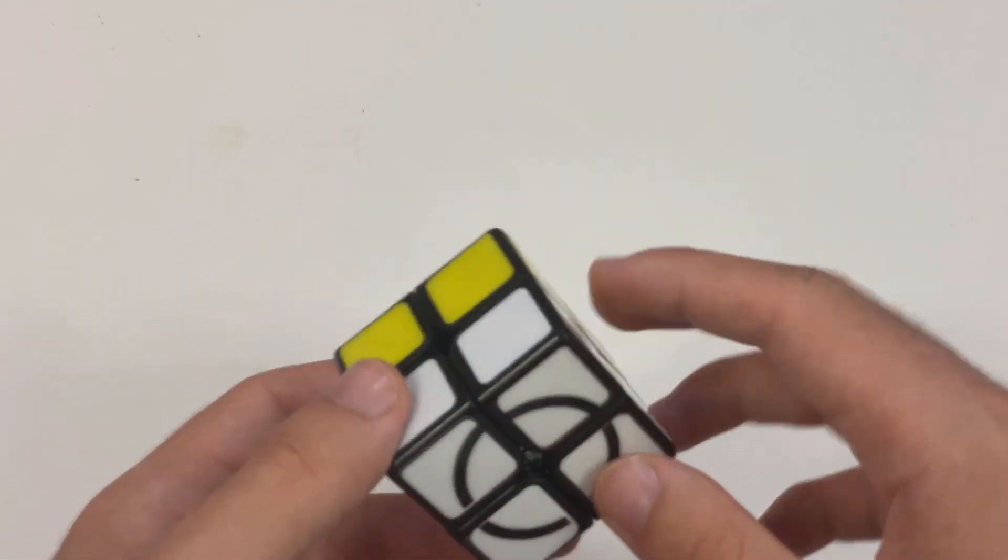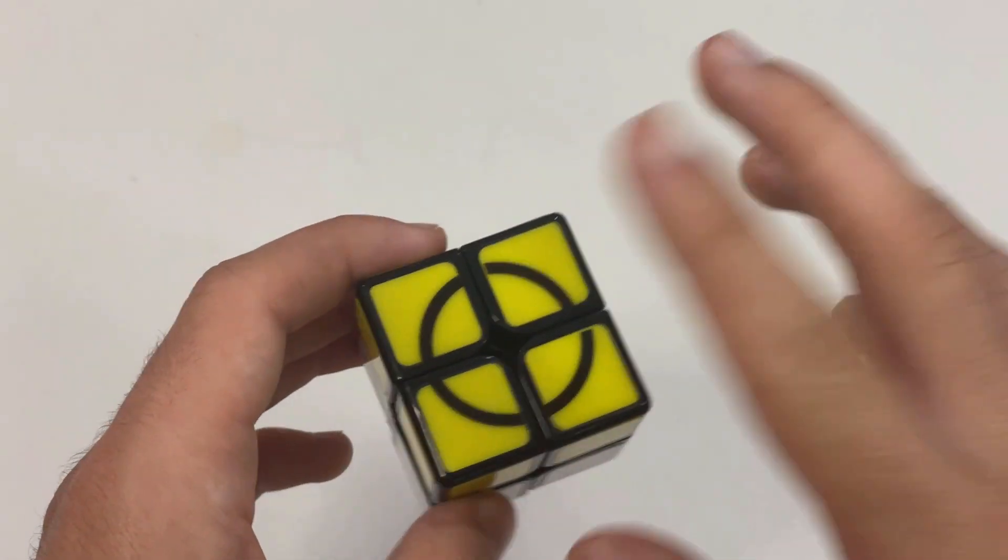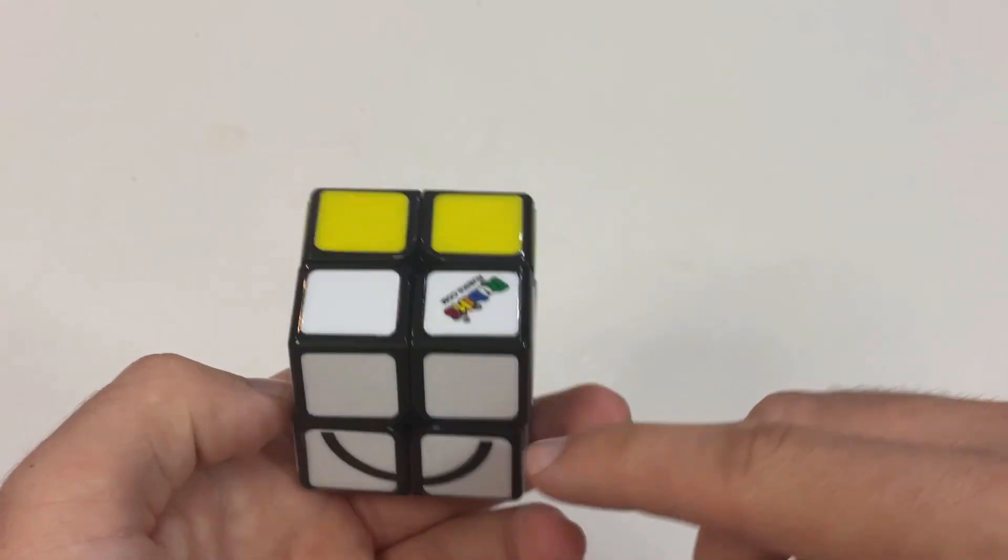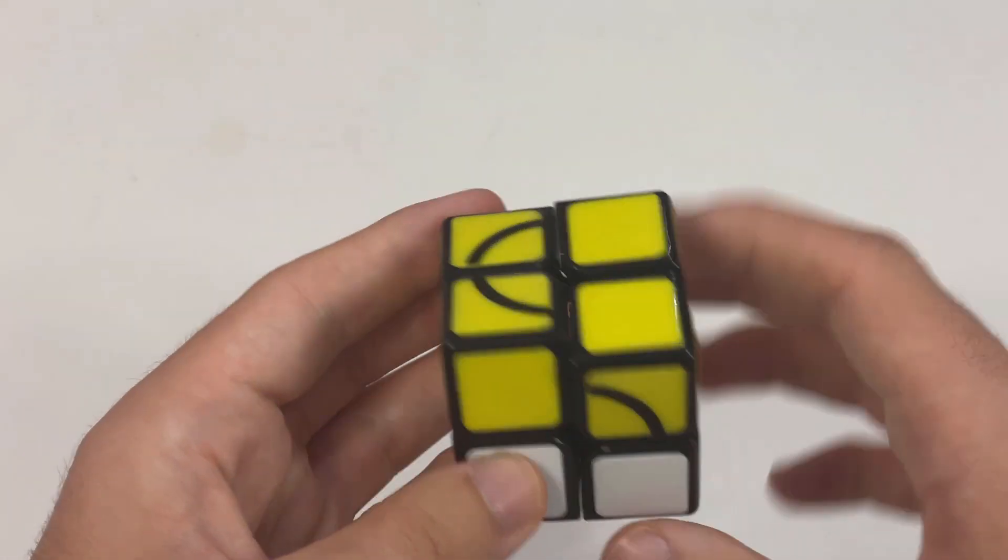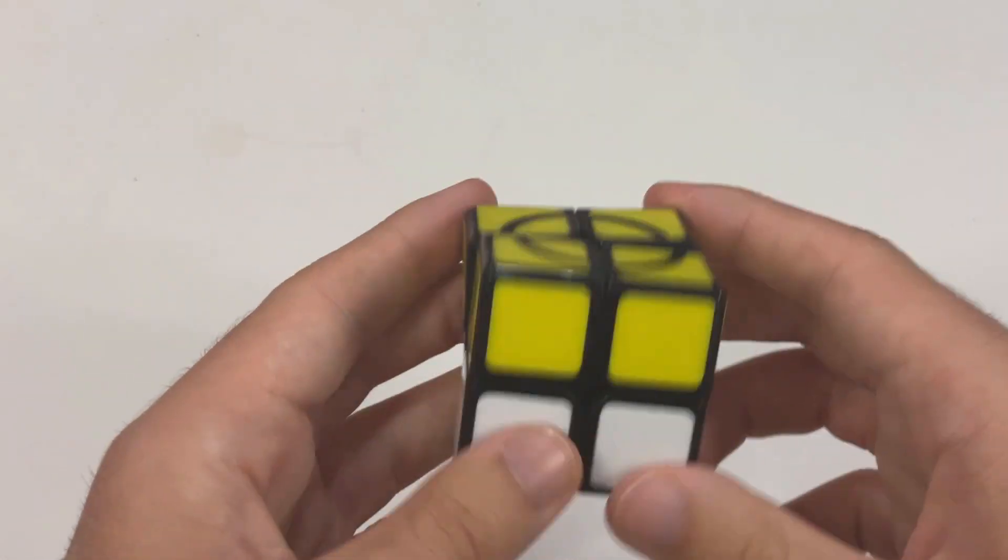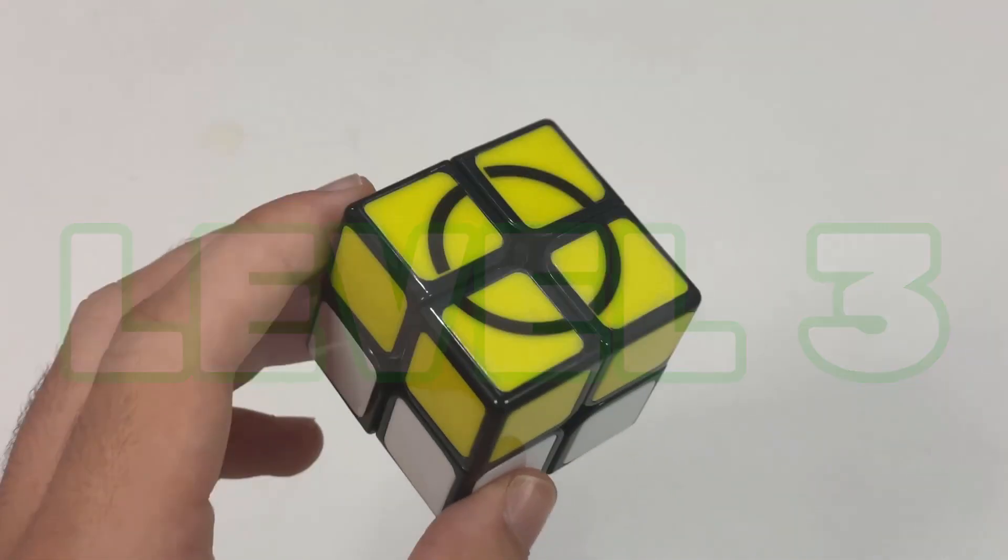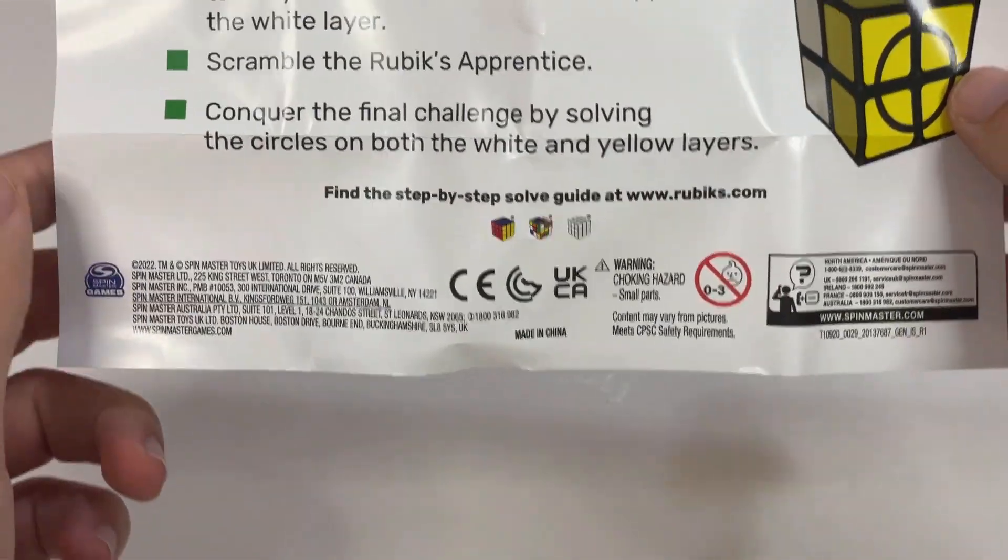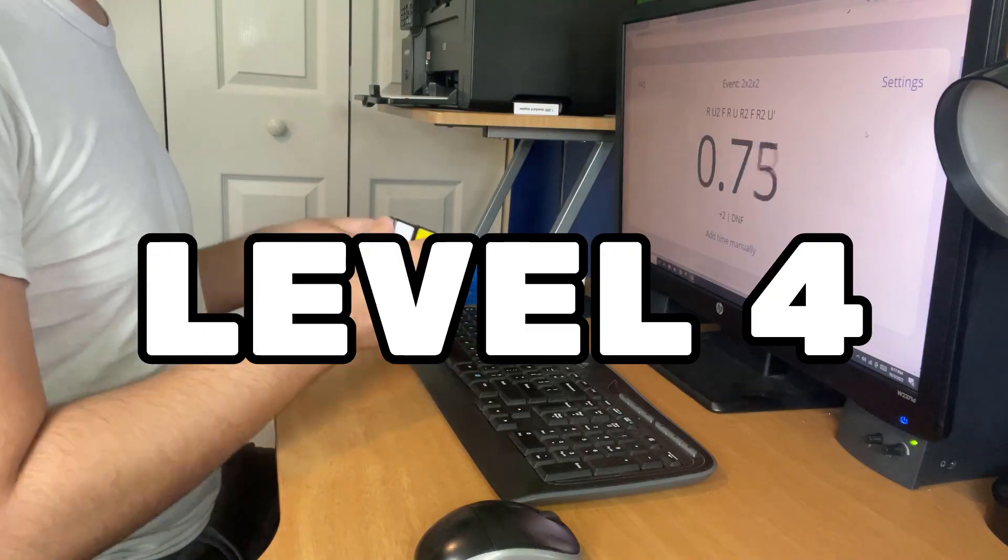Really all you need is to be able to make a first layer. Both layers are permuted but the orientation is off so I gotta solve it like this. Okay, so now that we're done with level three, we can move on to the secret level four that I just made up myself. The final challenge I'm going to do is try to solve this cube in under one second.